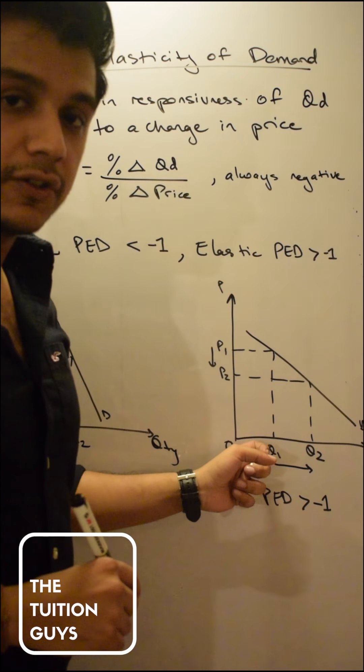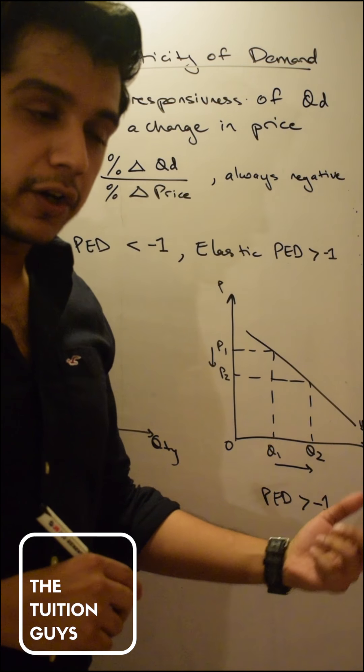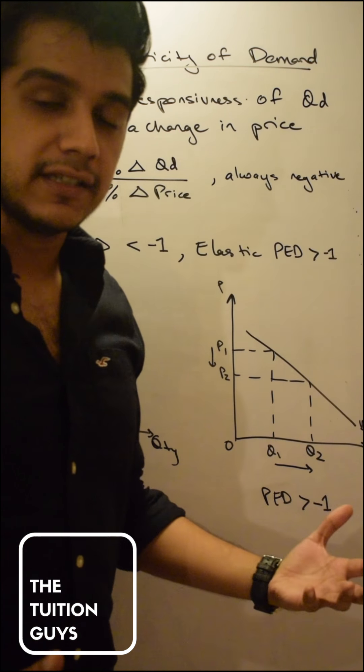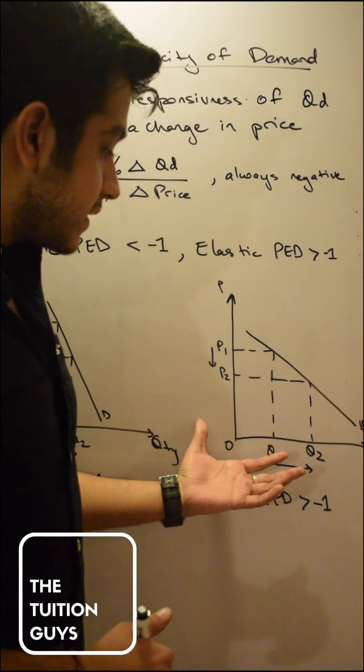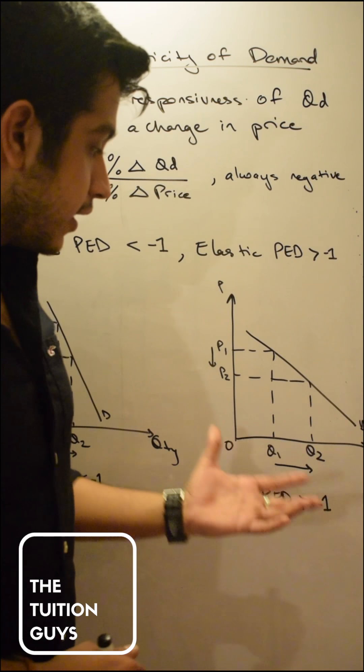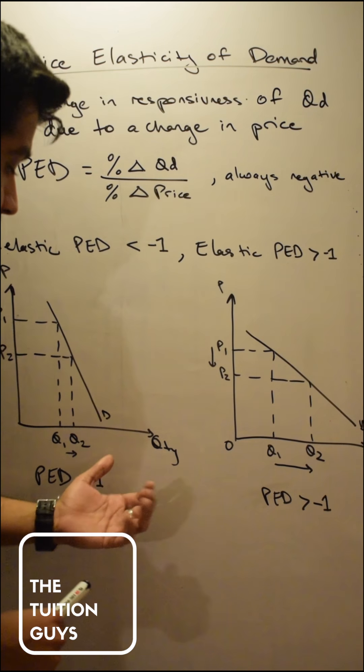Those are goods which are easily substitutable, all right, and which basically are not necessities, which are normal goods, which are basically things that I might be able to live without. So another example of inelastic goods are those goods which are basically necessities.